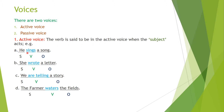Here is an example: 'He sings a song.' He is the subject of the sentence. This is an example of a transitive verb, and this example we call active voice. For another example: 'She wrote a letter.' She is the subject, wrote is the verb, and a letter is the object of the sentence. We call this verb a transitive verb.